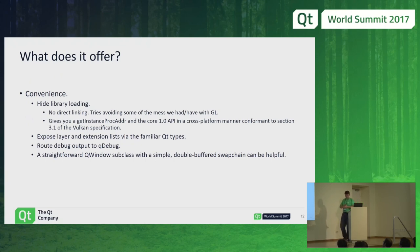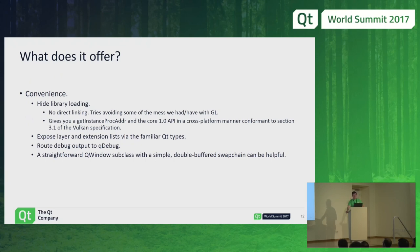A much bigger thing we also offer is the convenience of QVulkanWindow, which is a QWindow subclass — just like QOpenGLWindow is a QWindow subclass — aimed at those who want to get started quickly and don't necessarily want to fight swap chains in the beginning. It manages a swap chain for you, handles window resizes, and gives you the typical Qt setup with double buffering where your rendering thread is throttled to VSync — 60 Hz or similar. Those who want more control can use QWindow directly and set up their own swap chain.